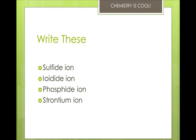Here's some practice. Sulfide is S2−. Iodide also has a minus, because it has the '-ide', so that's I1−. Phosphide is P3−. And strontium ion — remember it's the name of the element, which means it's a cation — so it's Sr2+.